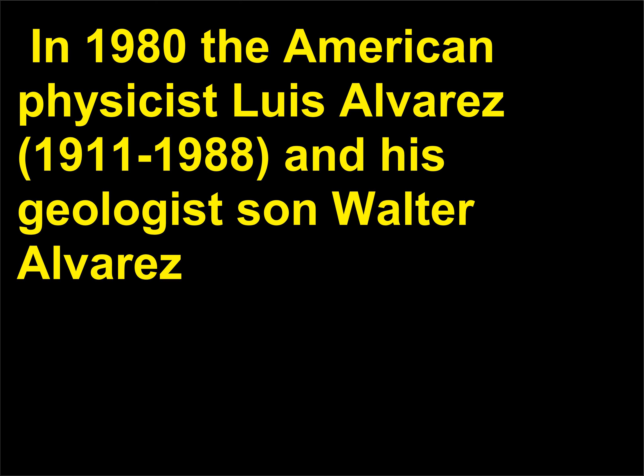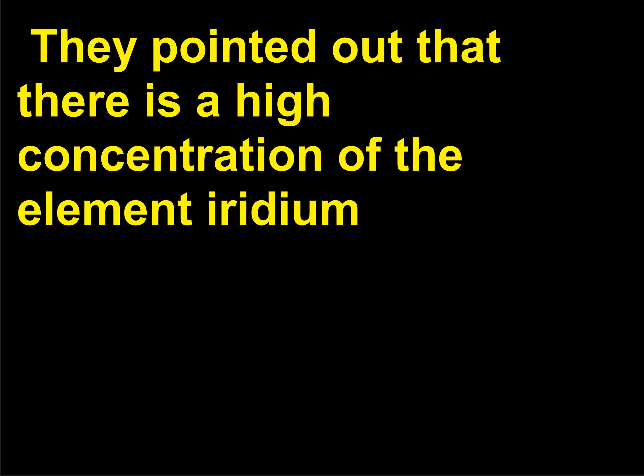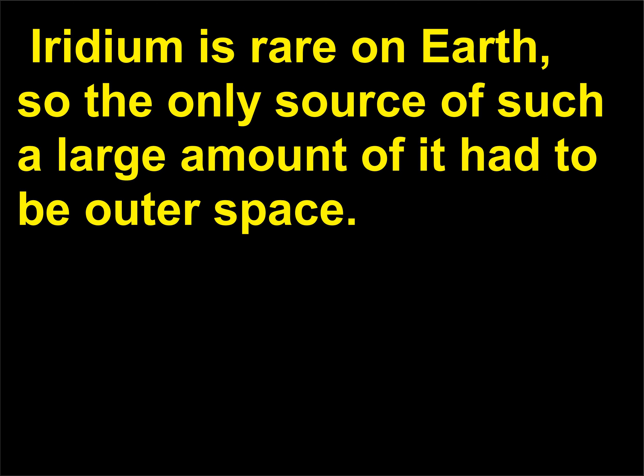In 1980 the American physicist Luis Alvarez, 1911 to 1988, and his geologist son Walter Alvarez, 1940, proposed that a large comet or meteoroid struck earth 65 million years ago. They pointed out that there is a high concentration of the element iridium in the sediments at the boundary between the Cretaceous and Tertiary periods. Iridium is rare on earth, so the only source of such a large amount of it had to be outer space.